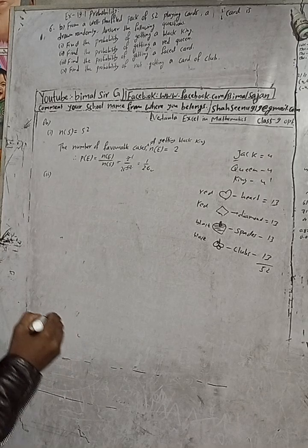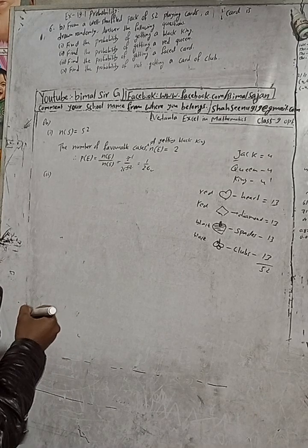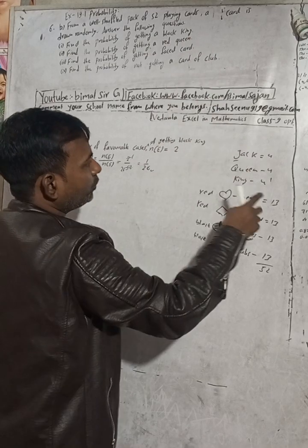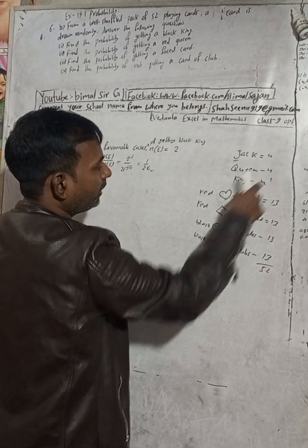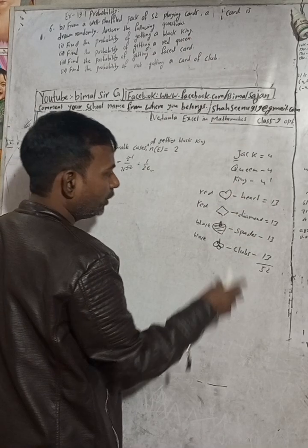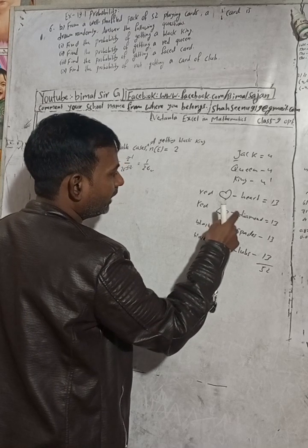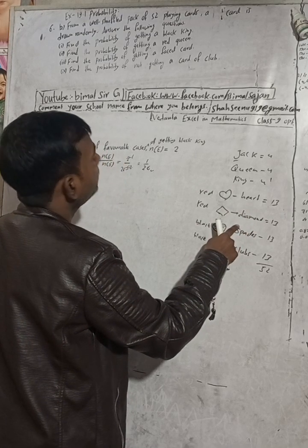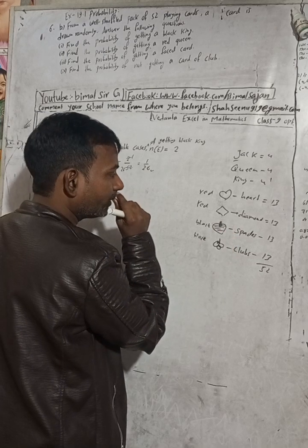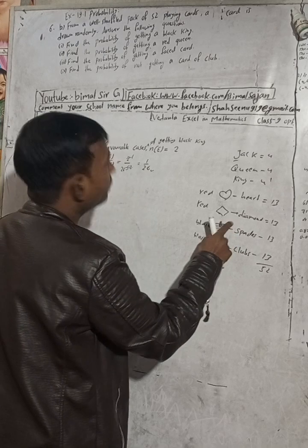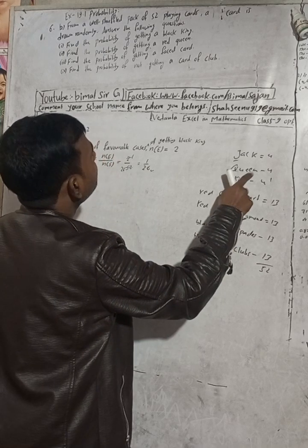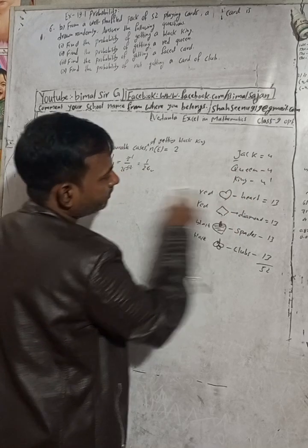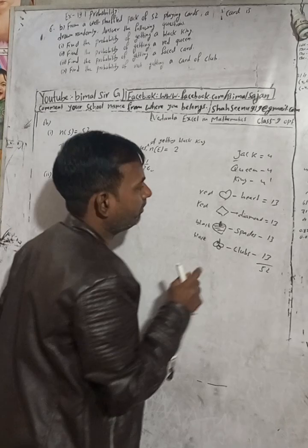The second question: find the probability of getting a red queen. There are 4 queens in total, but out of these 4 queens, 2 are black and 2 are red. Hearts and diamonds are red, so the 2 red queens come from hearts and diamonds.